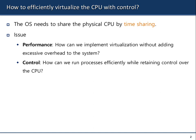How to efficiently virtualize the CPU with control: you have a single CPU and many programs to execute, so you need time sharing. There are two issues to address when virtualizing the CPU via time sharing. The first is performance — how can we implement virtualization without adding excessive overhead to the system? The second is control — how can we run processes efficiently while retaining control over the CPU?